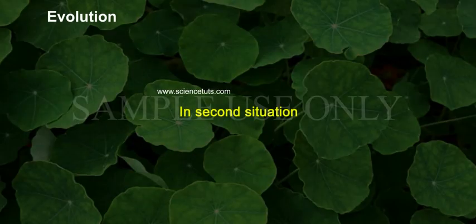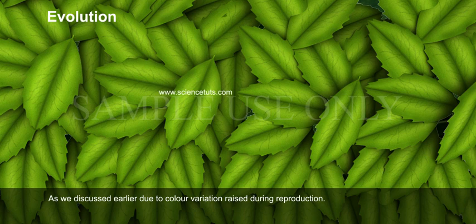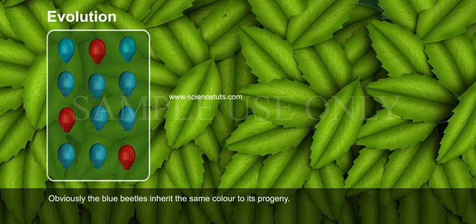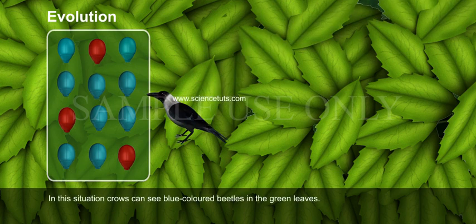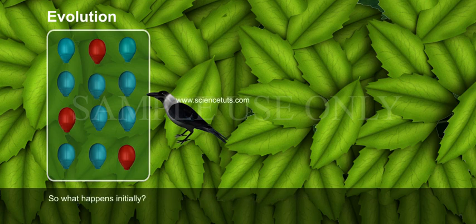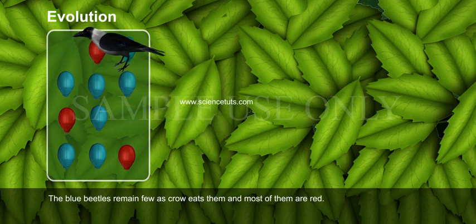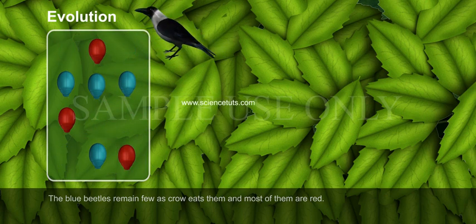In the second situation, due to color variation raised during reproduction, beetles are blue in color along with red. Obviously, the blue beetles inherit the same color to their progeny. In this situation, crows can see blue colored beetles on the green leaves. So initially, the blue beetles remain few as crows eat them and most of the population are red.